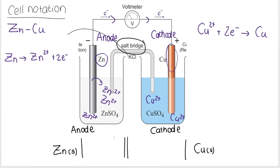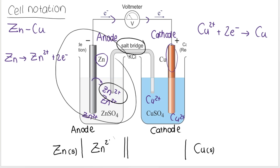For my anode half cell on the left, we have Zn²⁺ ions, which is aqueous. We don't include the sulfate ions — you just include the ions that relate to the anode. Then in the cathode half cell, we have Cu²⁺, which is also aqueous.